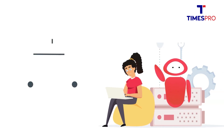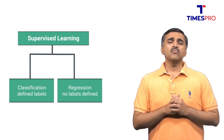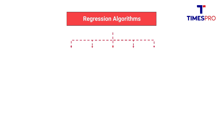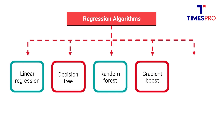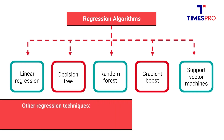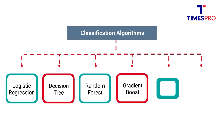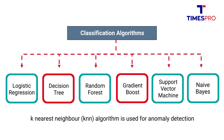So we know supervised learning has two categories: regression and classification. Some of the algorithms under regression are linear regression, decision tree, random forest, gradient boost, and support vector machines. Other regression algorithms include lasso and ridge regressions. Some of the algorithms under classification are logistic regression, decision trees, random forest, gradient boost, support vector machines, and Naive Bayes. Another classification algorithm predominantly used for scenarios like anomaly detection is the K-nearest neighbor algorithm.